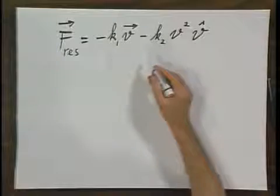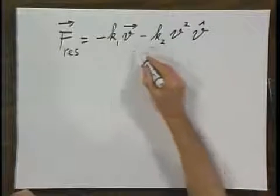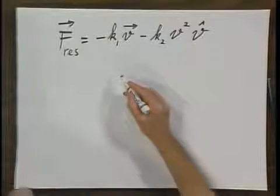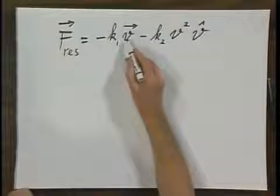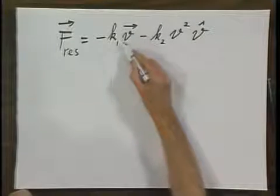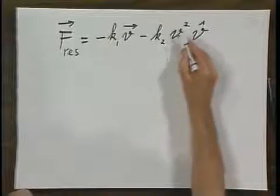What does this mean? It means that if K1 and K2 are positive values, that the resistive force has two terms, one proportional to V, and one proportional to V squared.